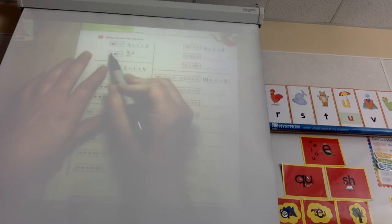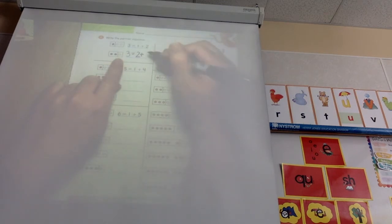And I see that two dots are blue. So I'm going to write a two and then I'm going to put a plus sign and I'm going to see how many dots are white. I see that one is white. So I'm going to put a one right there.